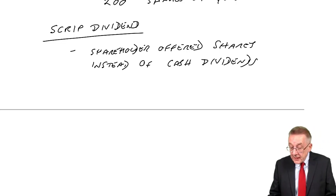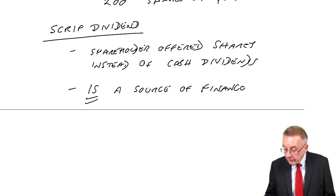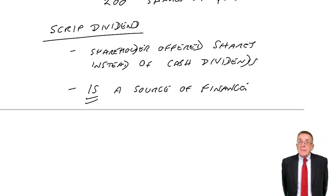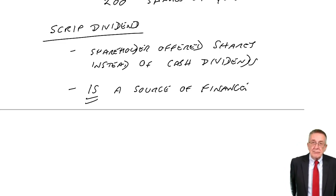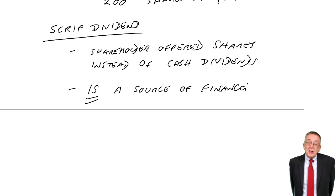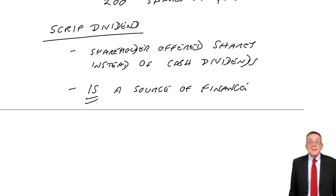And it's quite nice because, firstly, normally shareholders have the choice. So if you want the cash, you take the cash. If you don't need the cash, you get some new shares. So shareholders aren't forced into anything. It's their choice. But the company loves this because it is a source of finance. You're entitled, let's say, to a dividend of $1,000. And if you don't have a scrip dividend, they give you $1,000 in cash.